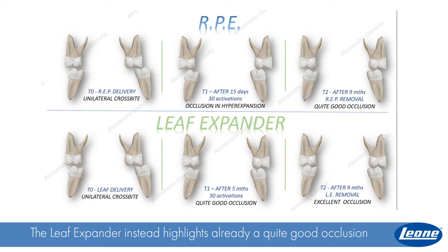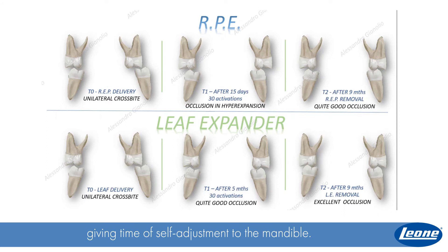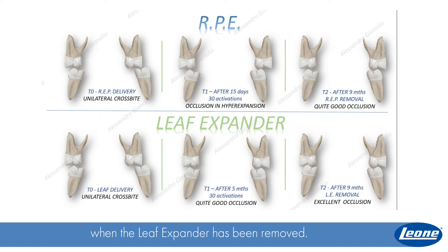The leaf expander instead highlights already a quite good occlusion after 30 activations and 6 mm of expansion, because it was done in five months, giving time for self-adjustment to the mouthful. In this way, an excellent occlusion is reached after nine months when the leaf expander has been removed.